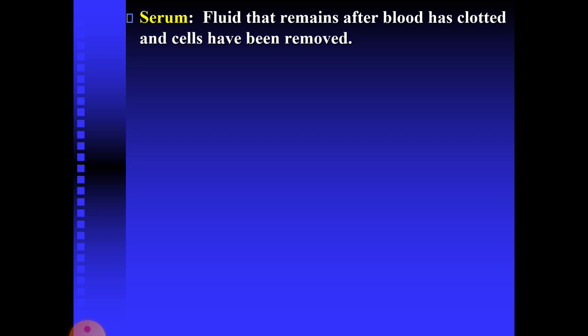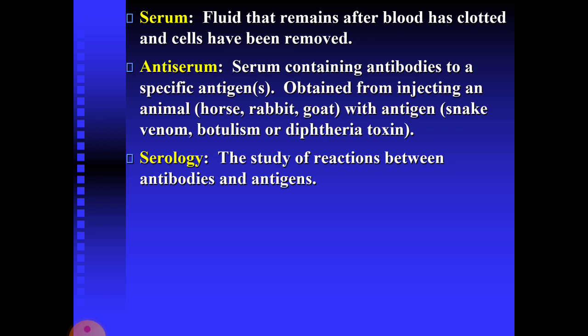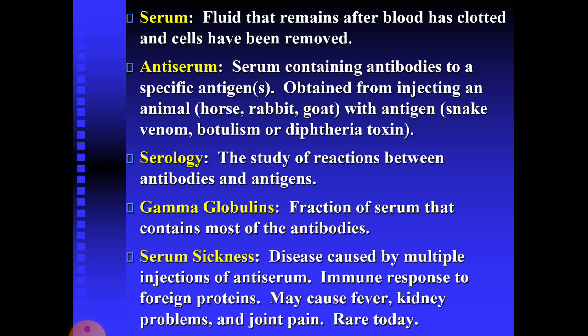Some key terminology: Serum is the fluid that remains after blood has clotted and cells have been removed. Antiserum is serum containing antibodies to a specific antigen, obtained from injecting an animal such as a horse, rabbit, or goat with antigens like snake venom, botulism, or diphtheria toxin. Serology is the study of reactions between antibodies and antigens. Gamma globulins are the fraction of serum that contains most of the antibodies. Serum sickness is the disease caused by multiple injections of antiserum — an immune response to foreign proteins that may cause fever, kidney problems, and joint pains. It is rare today.